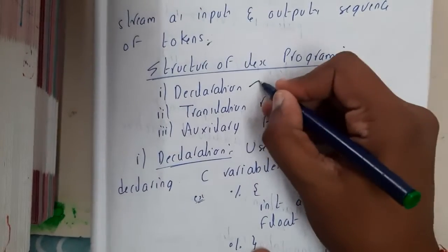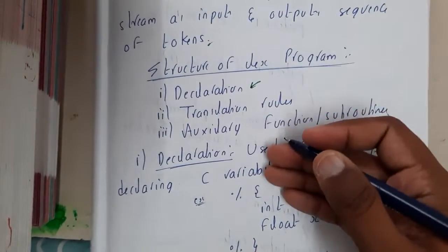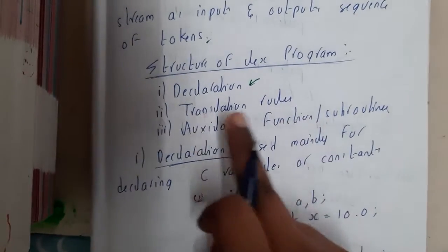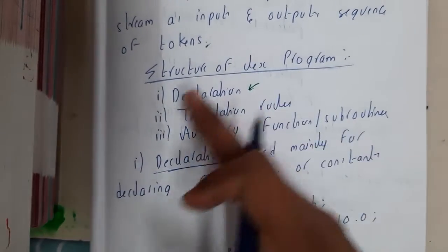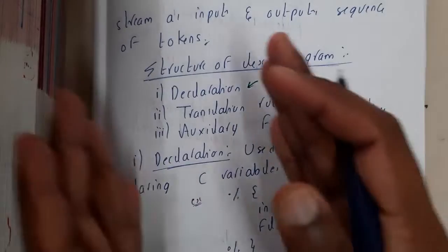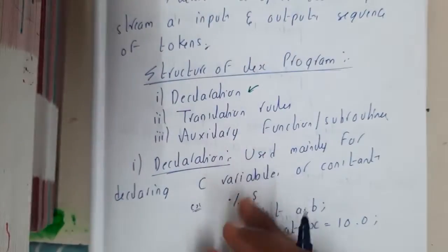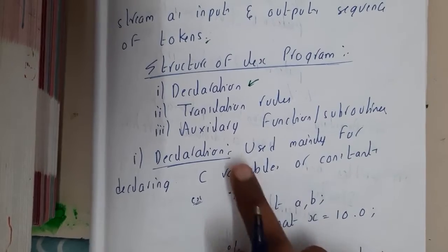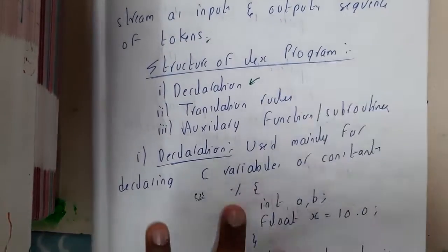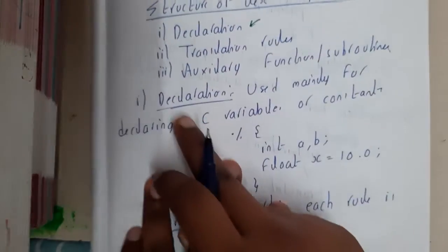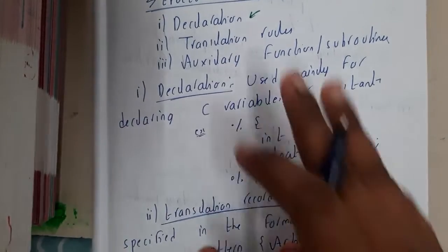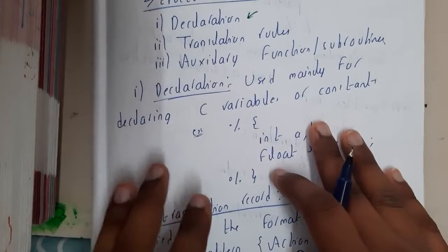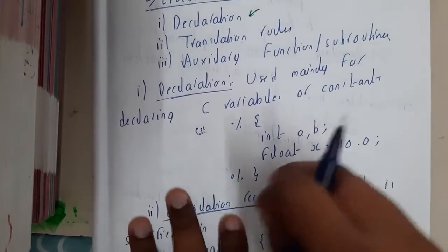Declaration is where you declare variables, include header files, and all those things. Translation rules are some kind of patterns — we write regular expressions with respect to patterns, and based on those patterns, actions are defined. Auxiliary functions are user-defined functions specifying what to do. These concepts might be a bit confusing when learning for the first time, so please concentrate.